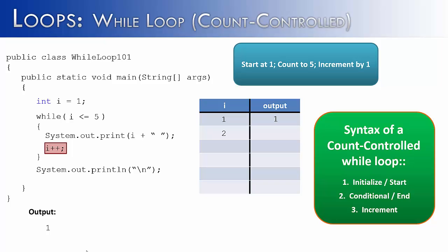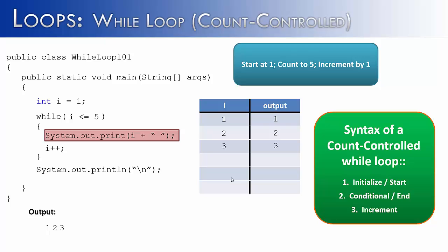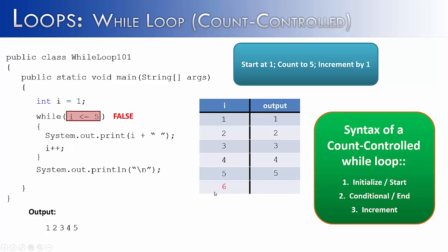After printing, we add 1 to i so i becomes 2, check the condition — yes, 2 is less than 5 — output 2, and the totality shows 1, 2. i becomes 3, condition is true, print 3. i becomes 4, condition is true, print 4. i becomes 5, and 5 is less than or equal to 5, so we print 5. Then i becomes 6 — noted in red in the t-chart — the condition is false because 6 is not less than or equal to 5, and the loop ends. The final output is 1, 2, 3, 4, 5.